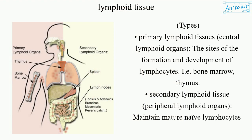Types: primary lymphoid tissues — central lymphoid organs — are the sites of the formation and development of lymphocytes, i.e., bone marrow and thymus.